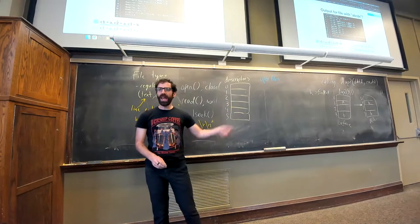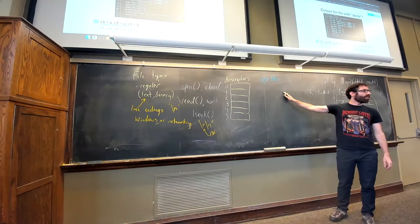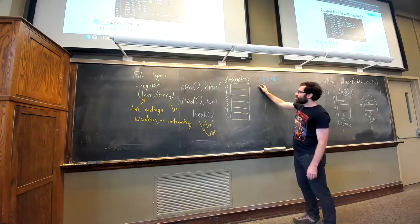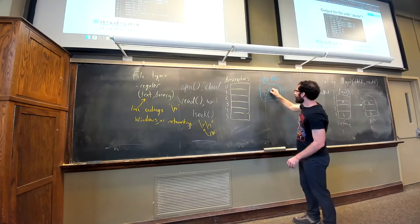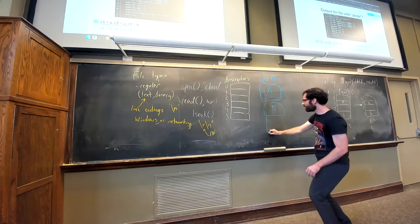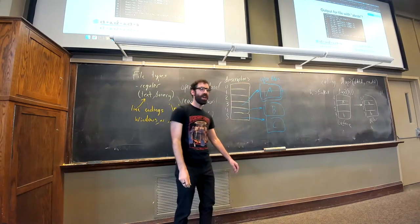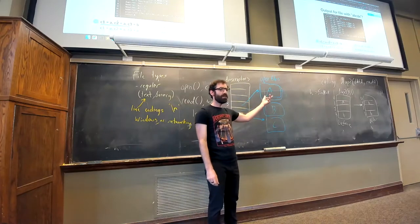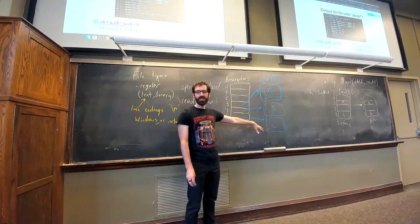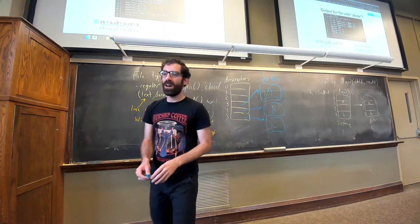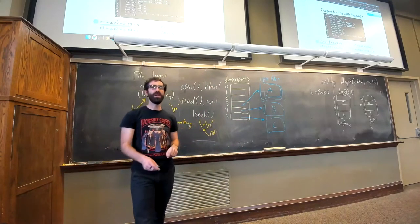When we have these three open calls, for each we get an open file structure — call them A, B, C — and remember each one is keeping track of a position within the file. Given this setup after the open calls, why does this print 'a' for c1, 'a' for c2, and 'b' for c3?